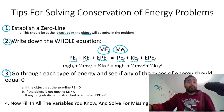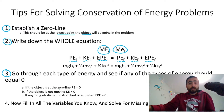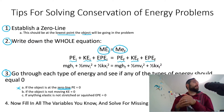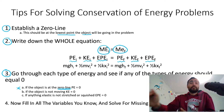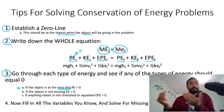Step three: go through each type of energy and see if any of the types of energy should be equal to zero. First, go through potential energy — if anything is at the zero line, that means the potential energy is zero. For example, if a stone is kicked from the ground and goes into the air, if we put the zero line at the ground, that means at the very beginning the potential energy is zero.